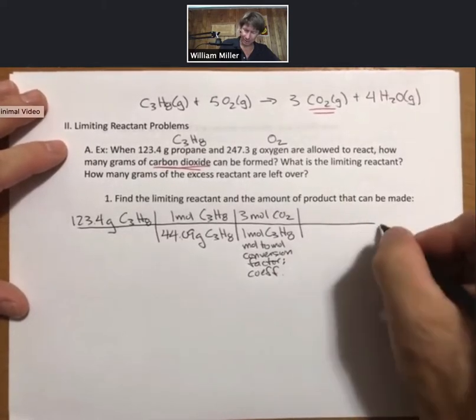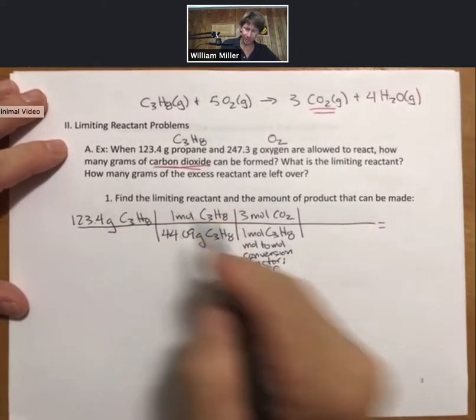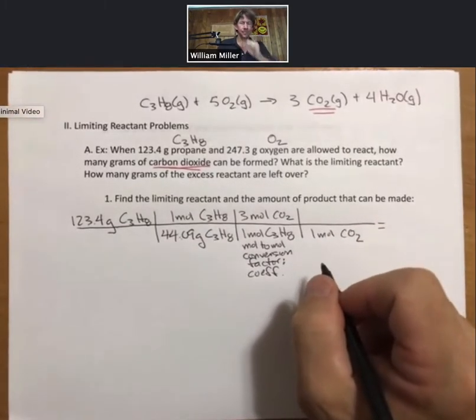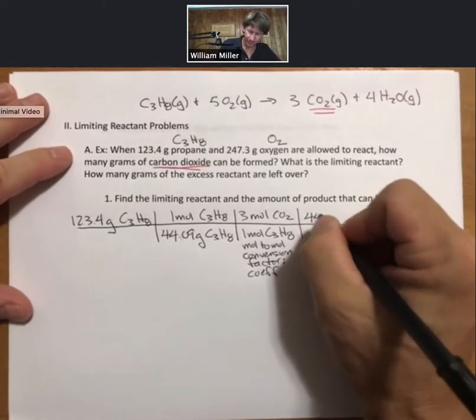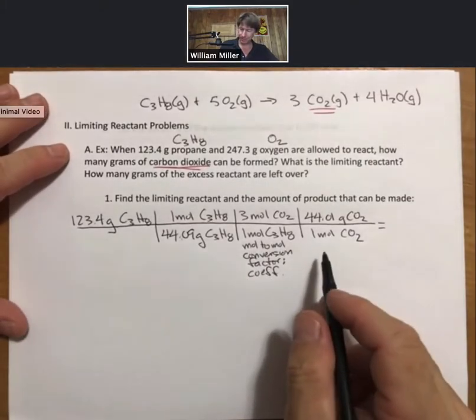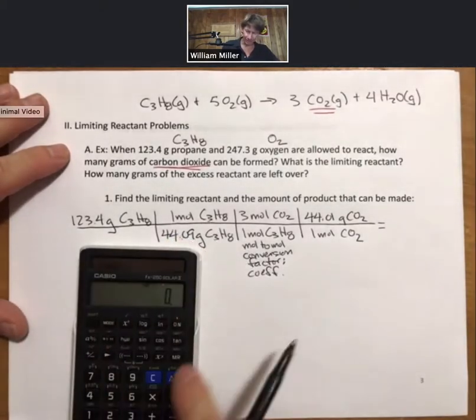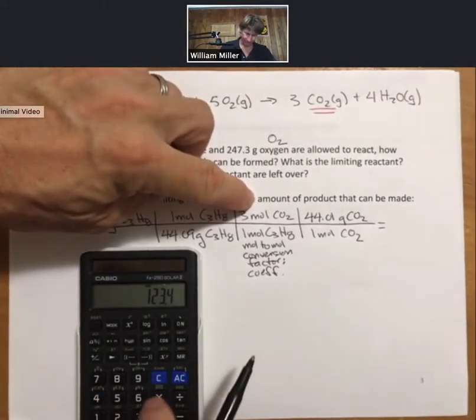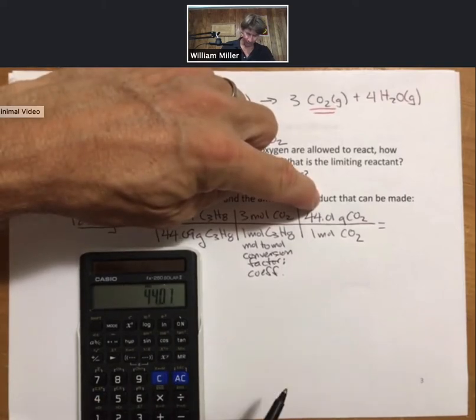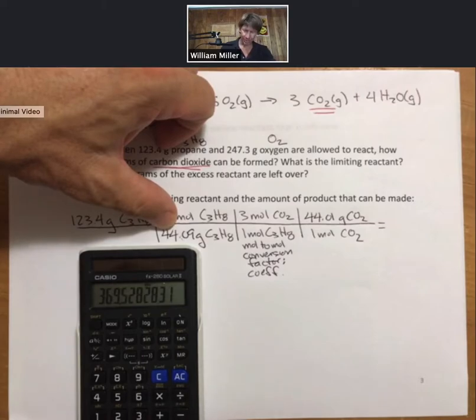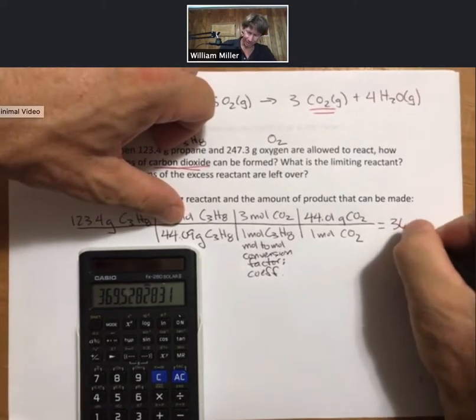And finally, to calculate my grams of carbon dioxide, I know that for every one mole of carbon dioxide, the molar mass is 44.01, and that's grams of carbon dioxide. So that's my setup. If I multiply all this out, 123.4 multiplied times 3, times 44.01, divided by all the numbers on the bottom...